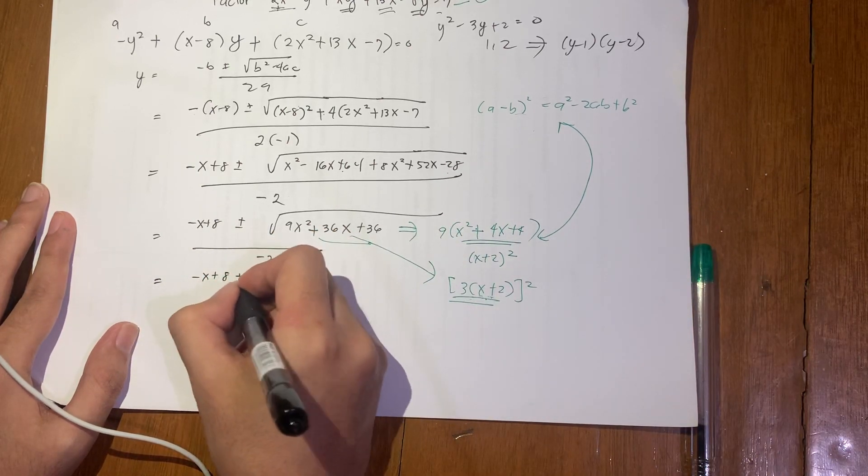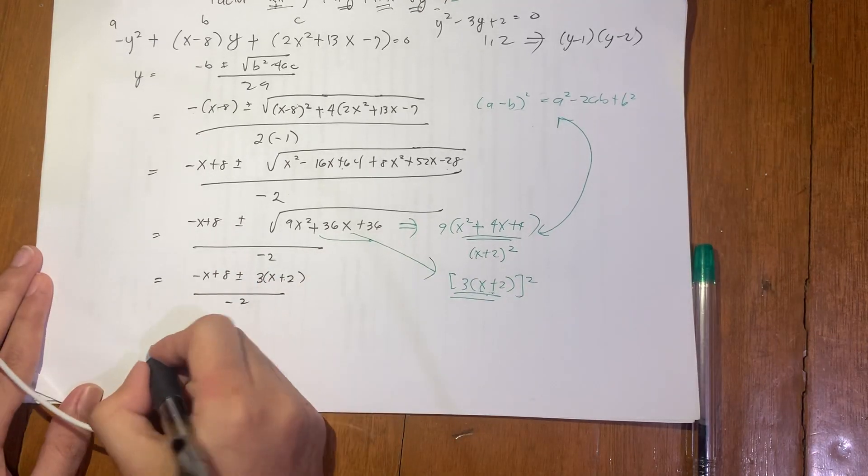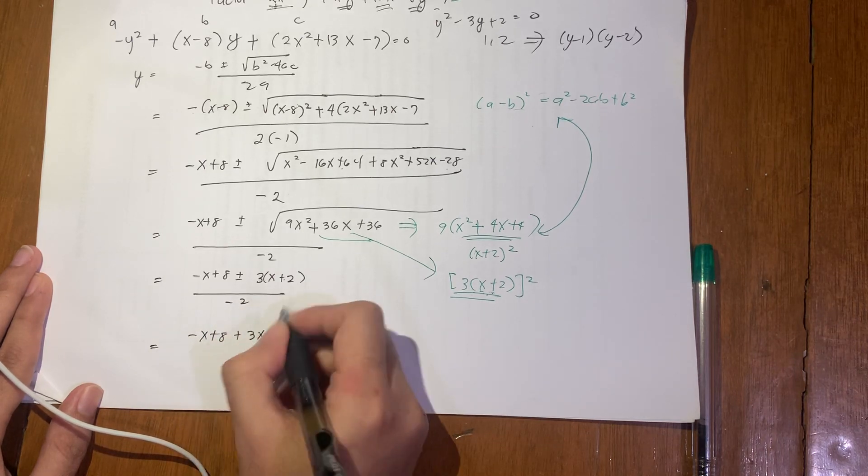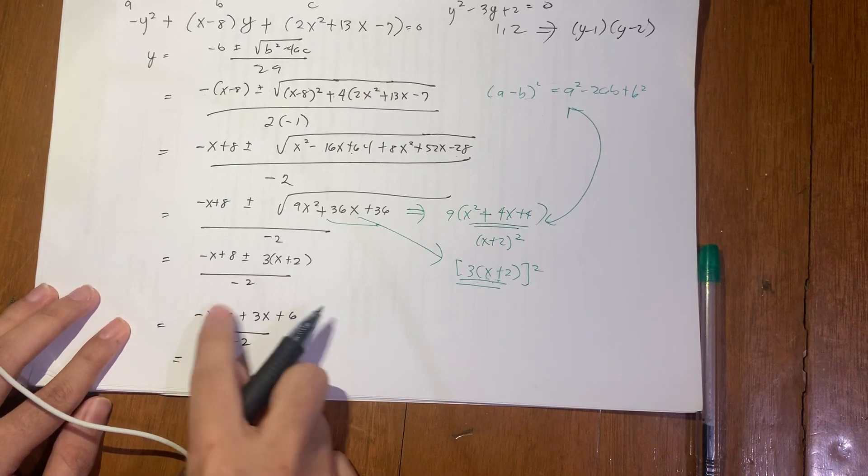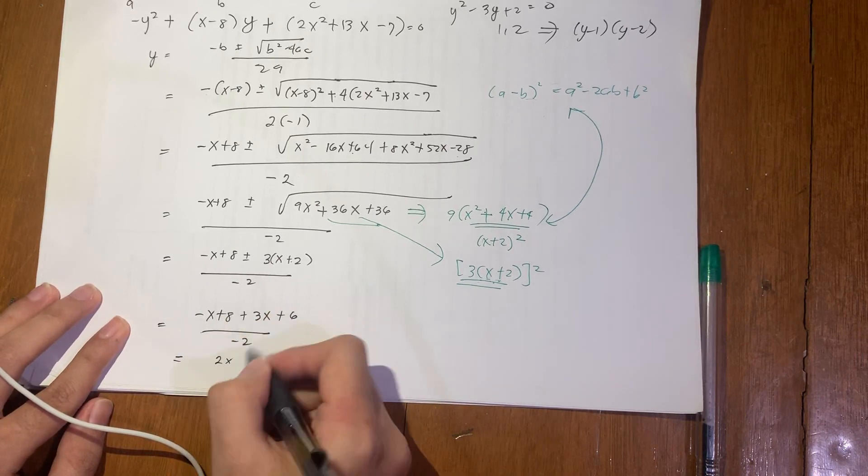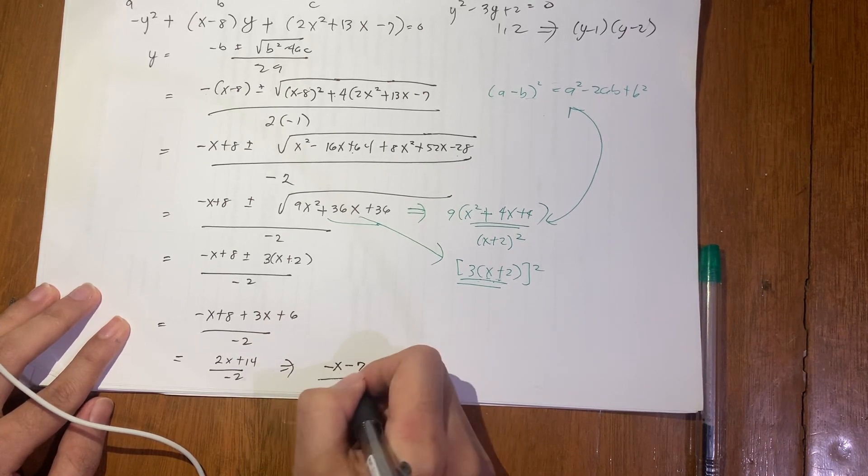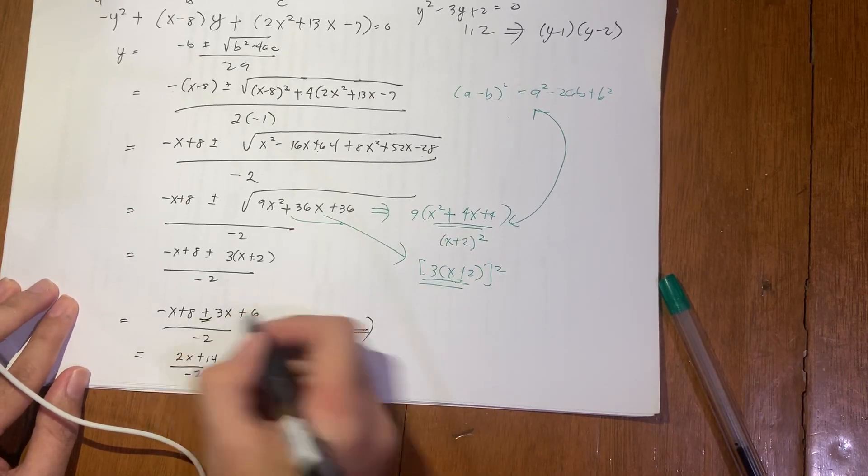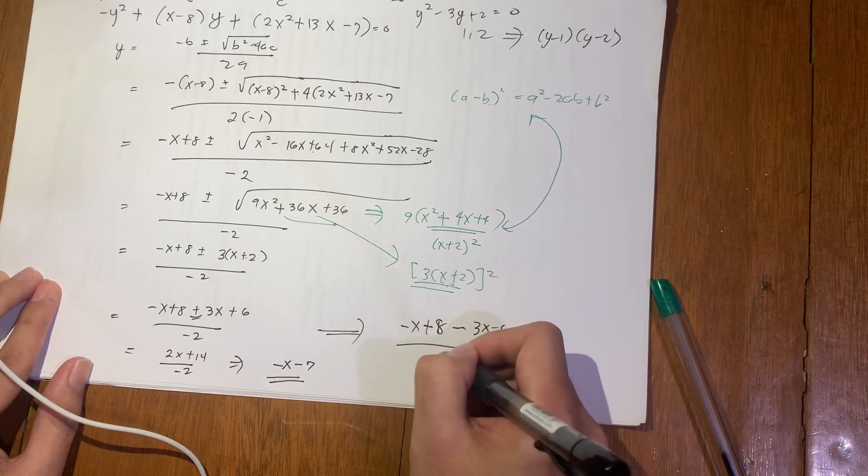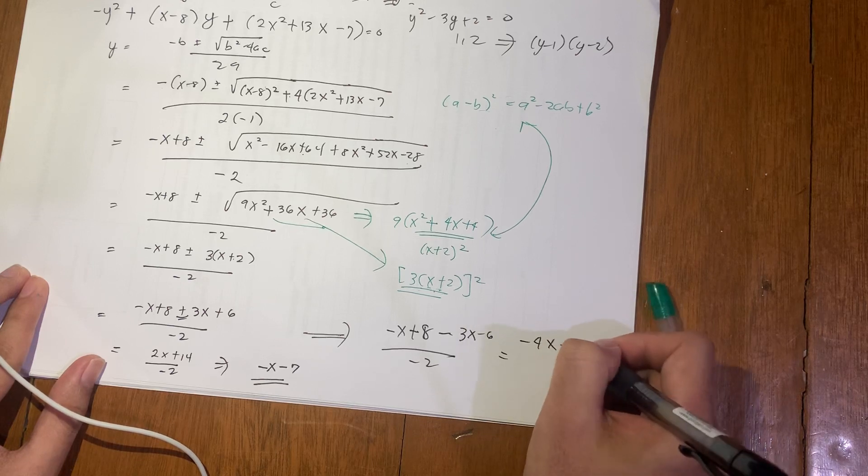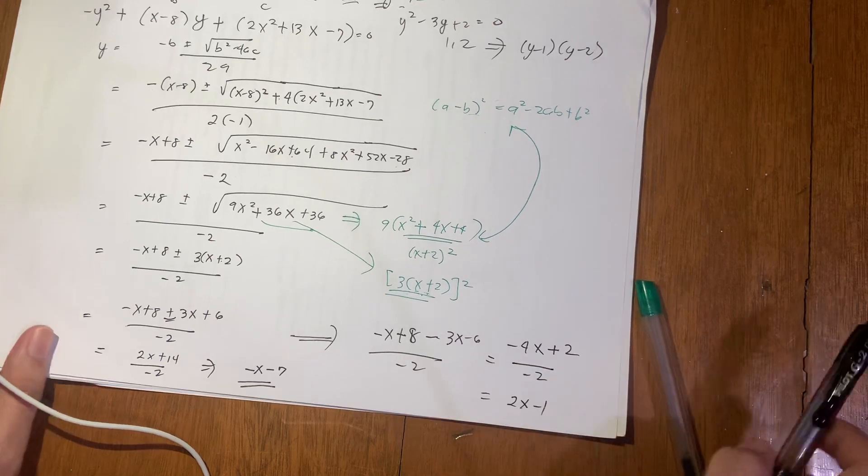So this is factorable as (x + 2) squared. This whole term I can factor out as 3 times (x + 2) quantity squared. So if I get the square root of that, I just get this term inside. In other words, this equals negative x plus 8 plus minus 3(x + 2) over negative 2. If this is plus: negative x plus 8 plus 3x plus 6 over negative 2, this becomes 2x plus 14 over negative 2, I get negative x minus 7.